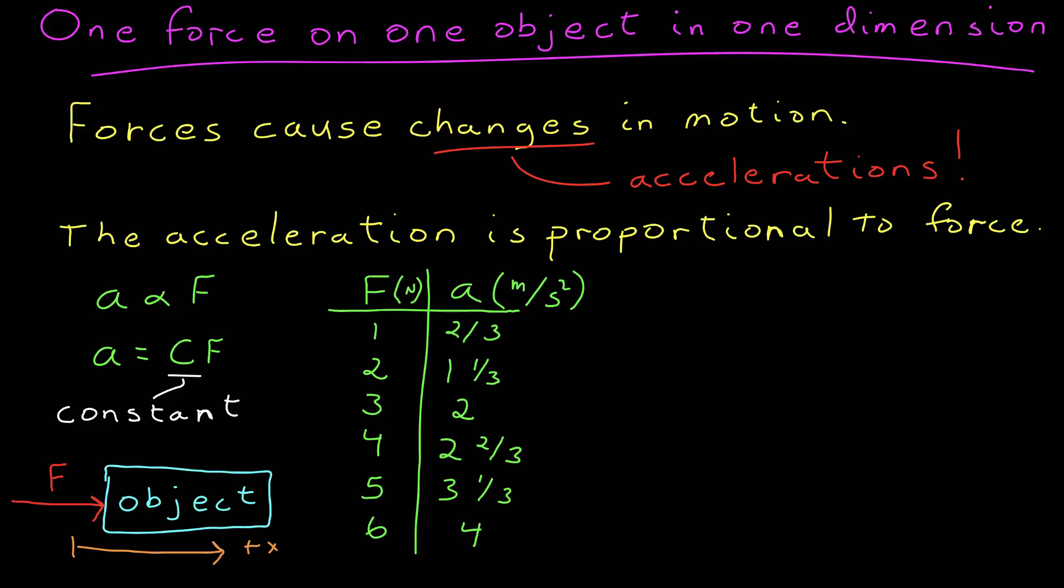We apply six different magnitudes of the force. One Newton, then two Newtons, all the way to six Newtons. And then we measure the acceleration at each time for each force. We find it's 2/3 for one Newton, 1 and 1/3 for two, etc.